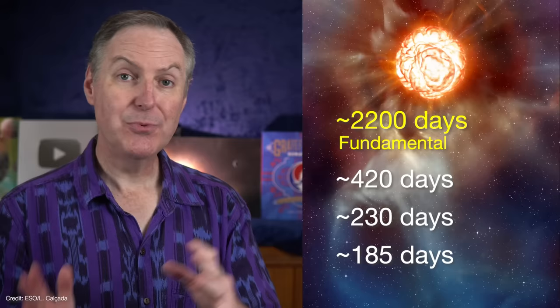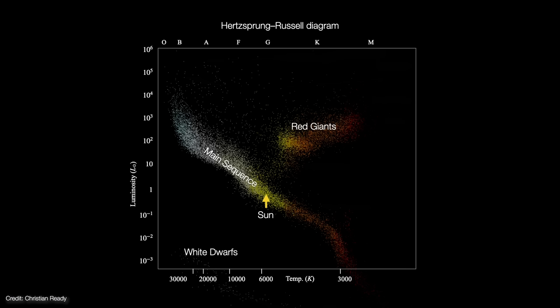But Sayo's team took the 2200-day period as Betelgeuse's fundamental cycle. They modeled the star to find the best fit to all four pulsation periods, as well as its observed temperature and luminosity, and from there figured out what the core has to be doing.